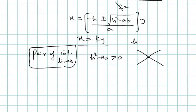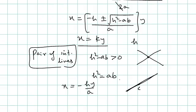The second case is a pair of coincident lines. If h² = ab, then the square root term becomes zero and we get only one equation: x = −hy/a. This means the pair of lines are coincident — both lines are the same. The discriminant equals zero, giving a perfect square with only one root, meaning one line. So h² = ab is the condition for coincident lines passing through the origin.